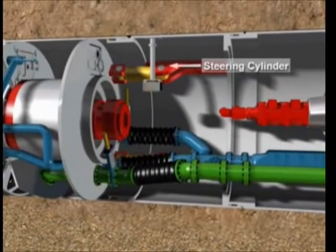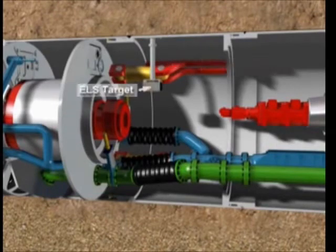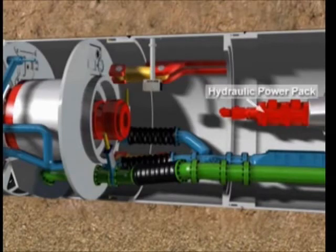The steering cylinders are situated in the first machine pipe and are used to adjust the direction of the cutter head with millimeter precision, thus making it possible to correct the line and level. In addition, a laser target is located in this machine pipe for determining the position of the machine.